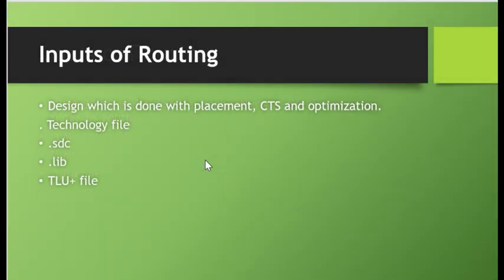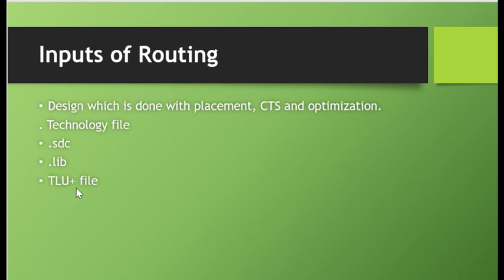So what are the inputs required before we start routing? We need a design which is done with placement, CTS and optimization. Then we need a technology file which contains the physical information of the metals and vias and the design rules to keep in mind while performing routing. Then we need the constraints — SDC, which is synopsis design constraints. We also need the timing information of all the cells in the .lib file. Then we need the RC parasitics of metal per unit length, which is in the TLU+ file — TLU+ stands for table lookup file. Once we have all these inputs, we can start the routing.